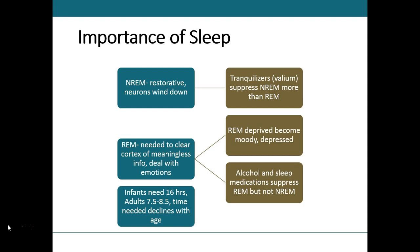Infants sleep much more than adults — about 16 to 20 hours a day. Adults who get a good seven to nine hours are in good shape. Unfortunately, as you age, the amount of sleep you get declines significantly and sleep disorders may develop.